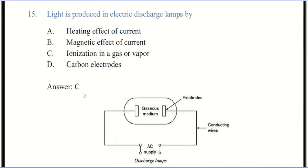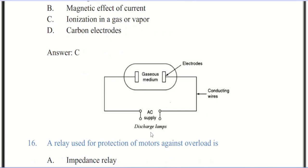Now we come to question number 15. Light is produced in electric discharge lamp by ionization in a gas or vapors. The correct answer is C. As you see the discharge lamp, there are two terminals where we are giving AC supply through conducting wires, and there is a tube inside which the medium is gases and two electrodes are also there.